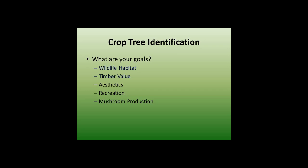The first thing you want to do is identify what your crop trees are, and that depends on what the landowner's goals are. If you're managing for wildlife habitat primarily, you'll choose certain trees versus managing for timber value. Some people manage for aesthetics, recreation — whether hiking or cross-country skiing — or even mushroom production. In this talk, I'll primarily discuss wildlife habitat and timber value.